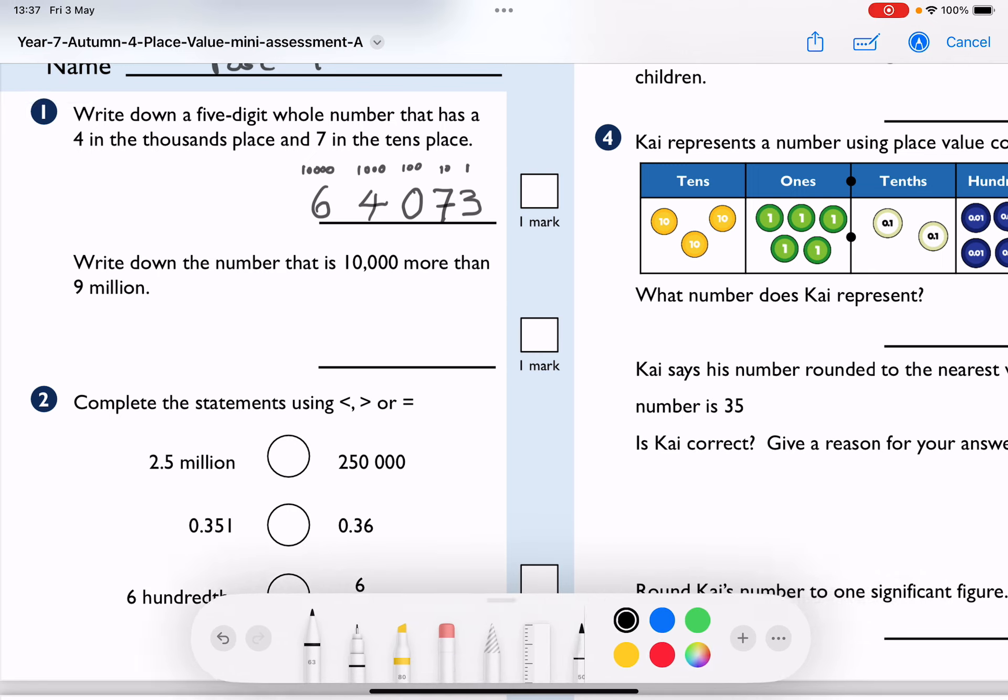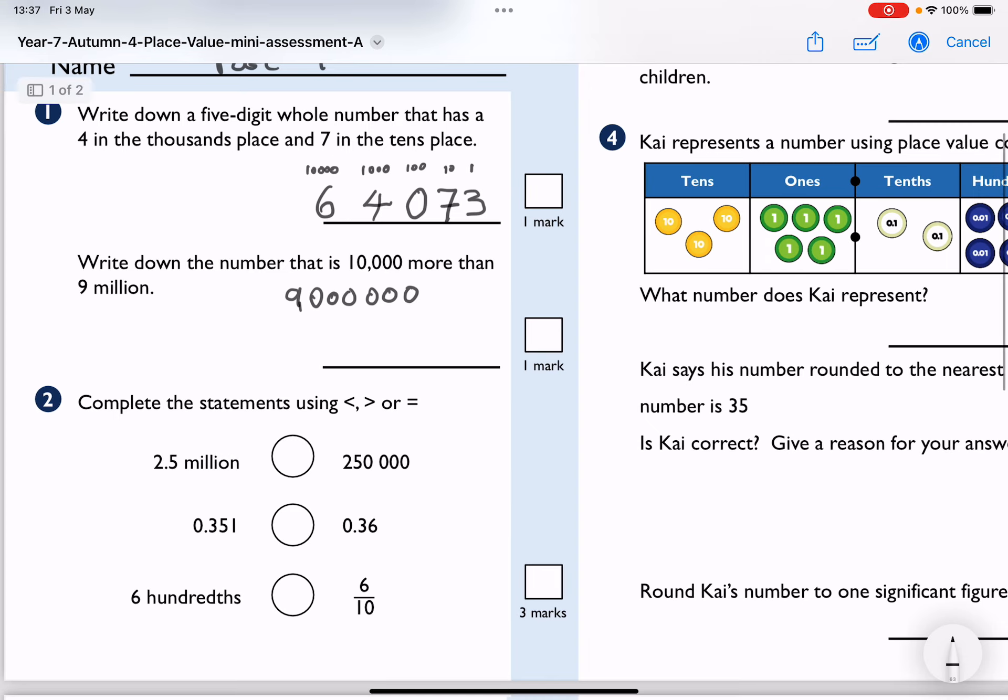Right, write down the number that is 10,000 more than 9 million. Well, if I look at 9 million, that's 9 with 6 zeros. And then 10,000 is in the units, tens, hundreds, thousands, 10,000's column. And if I add those together, I end up with 4 zeros, 1. So 9 million and 10,000 looks like that. And we usually put those commas in to help us work out the size of the number.